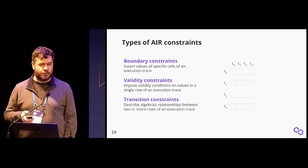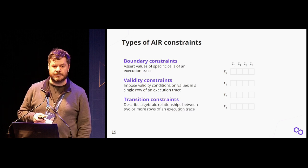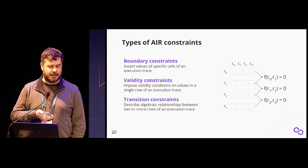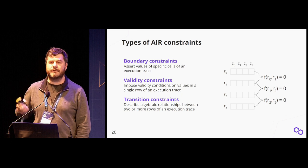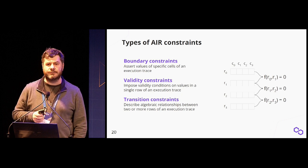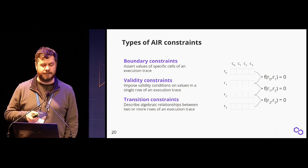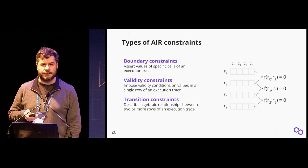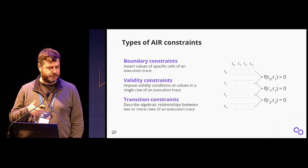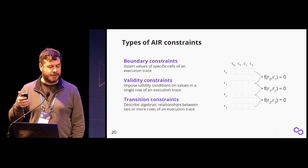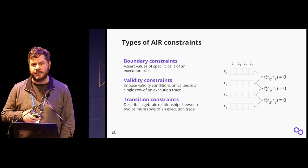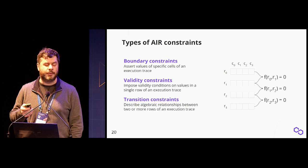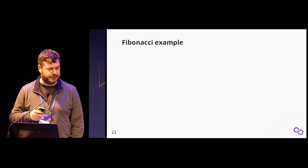The third type is transition constraints, which work with two or more consecutive steps of the computation. In this case, for two steps, you take two consecutive rows from the trace, and the function you evaluate over them should output zero if the constraints are valid. This is a useful way to think about how constraints are structured—eventually you get into rational constraints as well.